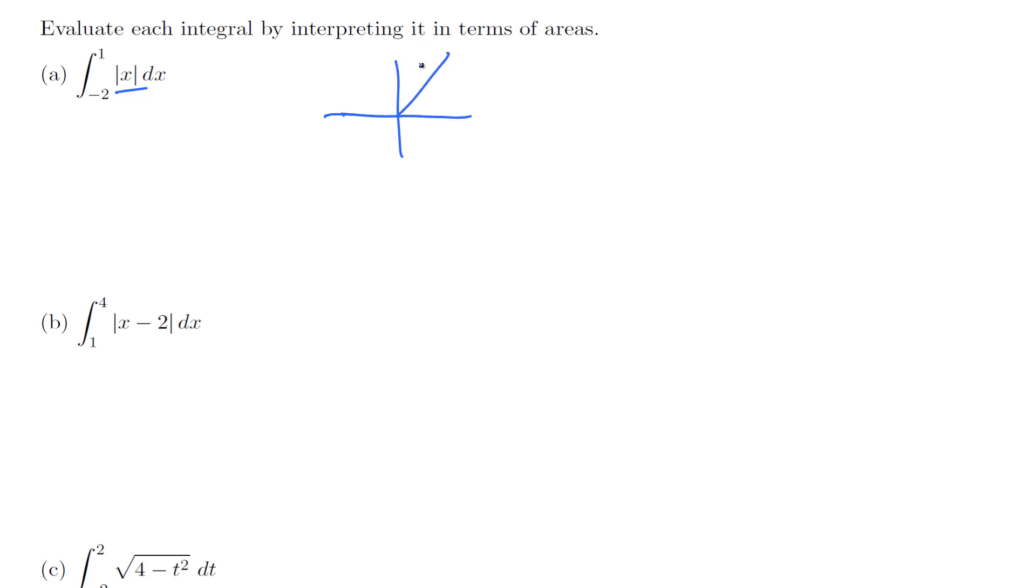We are integrating from negative 2 to 1. That goes here up to 2 because it's the absolute value of x, so negative 2 gives 2. The upper limit is 1, so it will be here at 1.